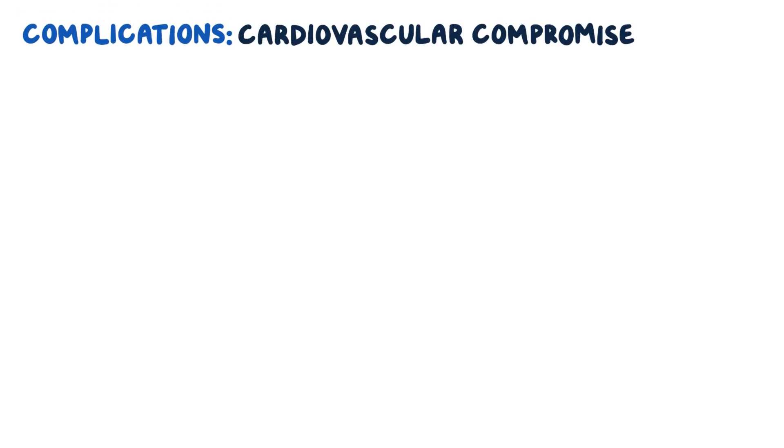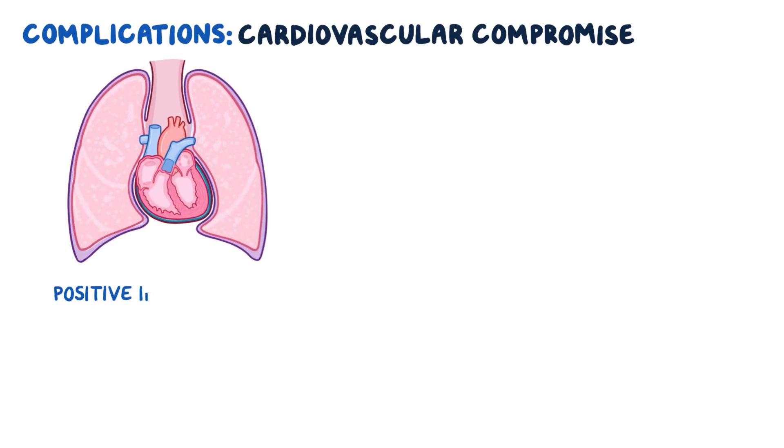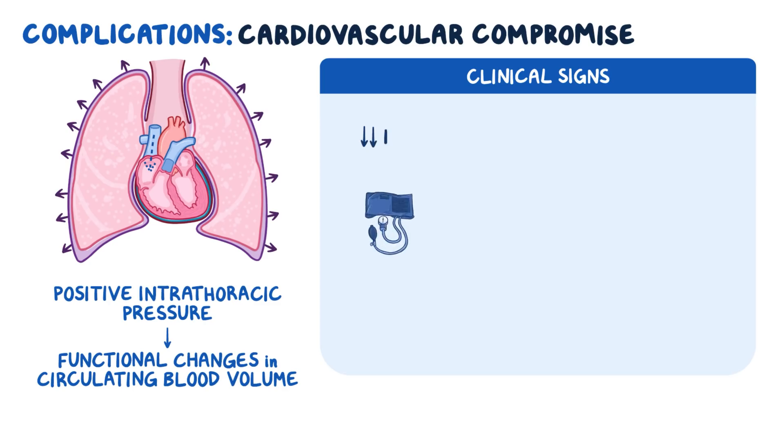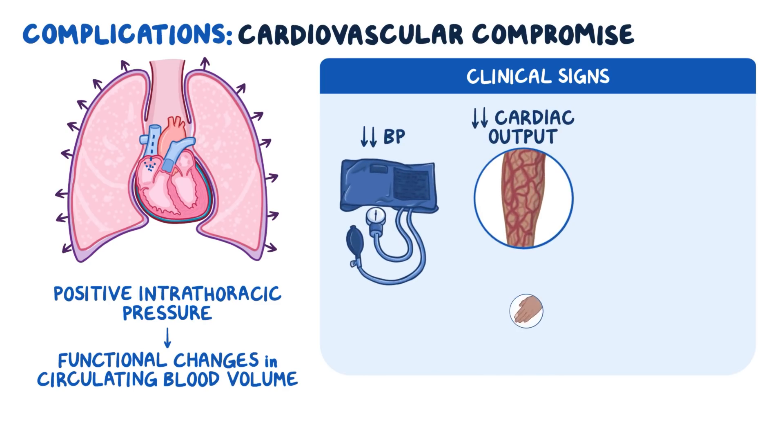Cardiovascular compromise or collapse is caused by the positive intrathoracic pressure created in mechanical ventilation. This positive pressure can create functional changes in the patient's circulating blood volume because of a decrease in the amount of blood returning to the right side of the heart. Clinical signs will show up as decreased blood pressure, decreased cardiac output, which includes mottling of the skin and increased capillary refill time, and acute changes in the heart rate.